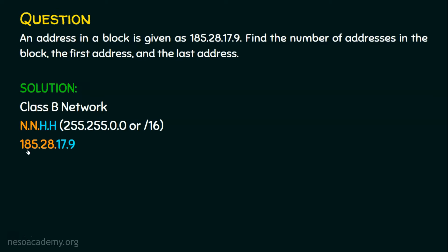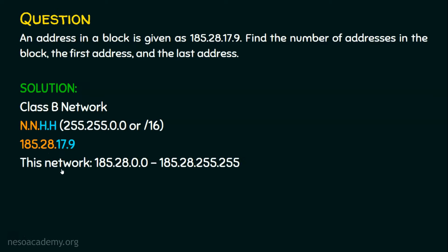We know the first two octets are fixed. So the network address will be 185.28.0.0, because the third and fourth octets are for the host. The starting host portion is 0.0 and the last address will be 185.28.255.255.